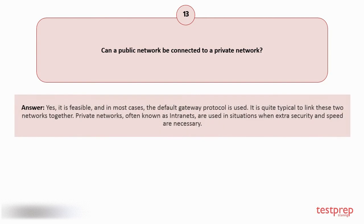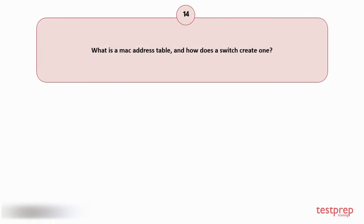Question number thirteen: Can a public network be connected to a private network? Your answer is: Yes, it is feasible, and in most cases the default gateway protocol is used. It is quite typical to link these two networks together. Private networks, often known as intranets, are used in situations where extra security and speed are necessary.